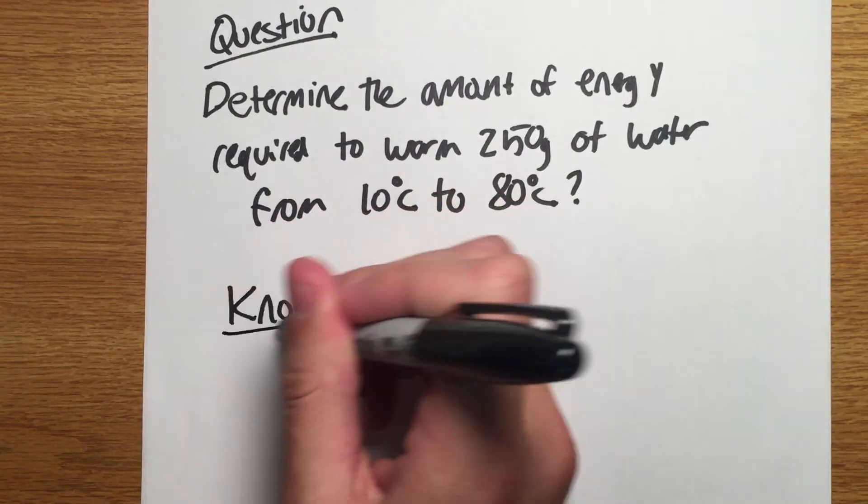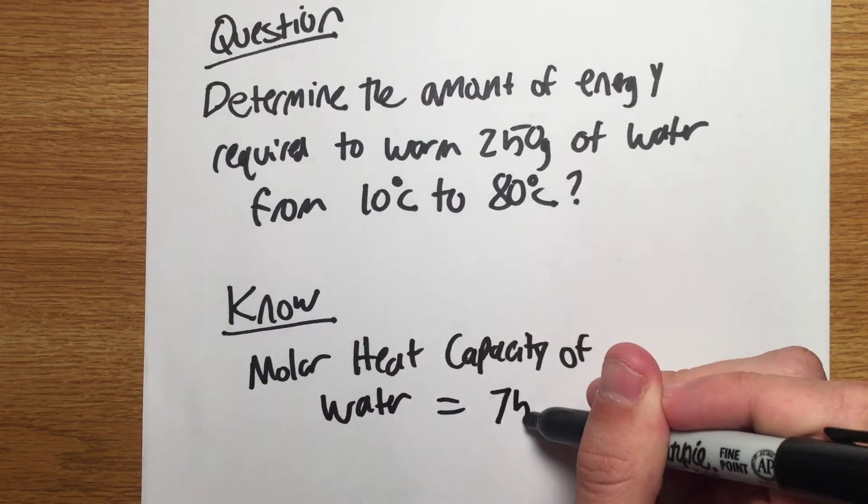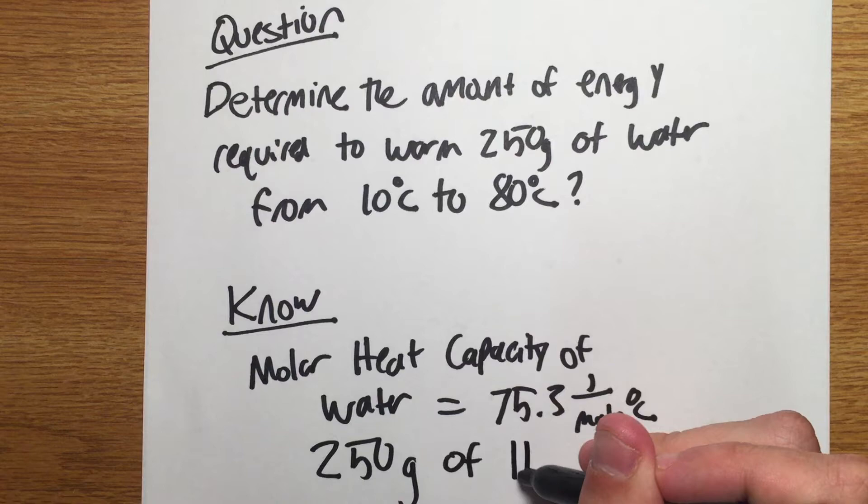Let's start by listing what we know. The molar heat capacity of water is 75.3 joules per mole degree Celsius and we have 250 grams of water.